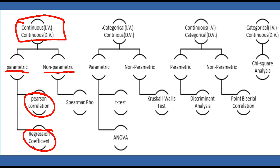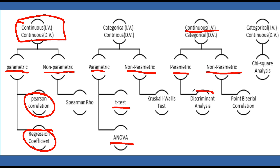If the first variable is categorical and you're trying to understand the continuous variable, again you've got to start with is it parametric or nonparametric? That has to do with normality and the shape of the distribution. If it's normal, then you can do a t-test or ANOVA, depending on how many groups you have in your categorical variable. Moving on to a continuous independent and categorical dependent — you can use discriminant analysis and point-biserial correlation for nonparametric. And for categorical independent and continuous dependent, you can do a chi-square analysis.